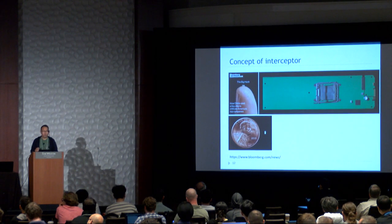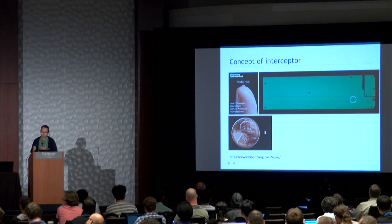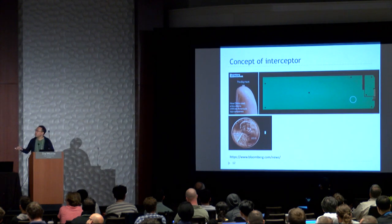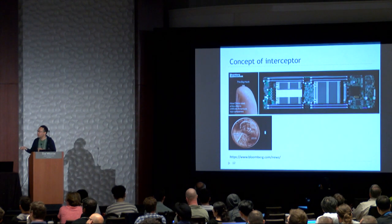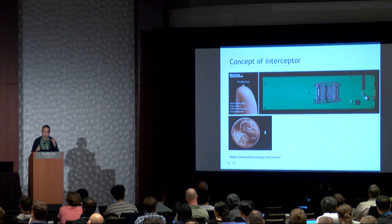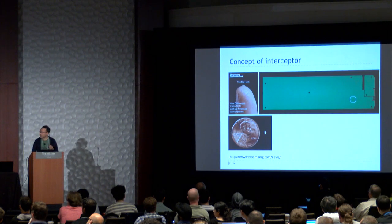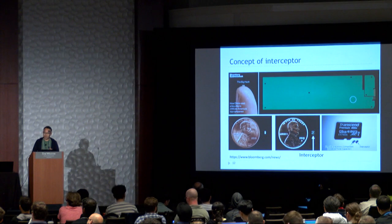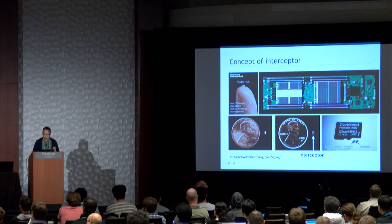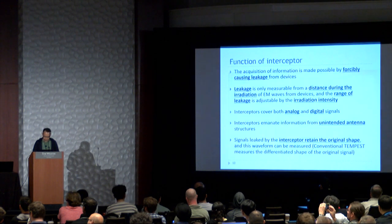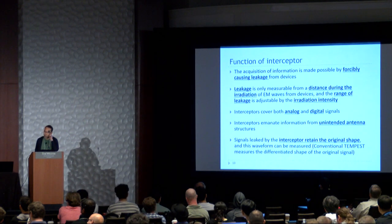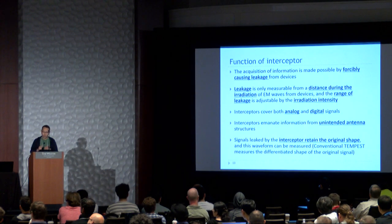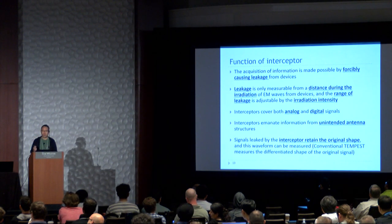As you know, Bloomberg published an article about the possibility of malicious circuits being installed on boards during the manufacturing process. In that article, very small elements were shown as samples. Our proposed interceptor is also very small — like this one. As Bloomberg's article mentions, it may be installed during the device manufacturing process. Moreover, the interceptor can also be installed after fabrication. The interceptor causes EM leakage forcibly and controls the timing, the strength, and the distance of leakage.